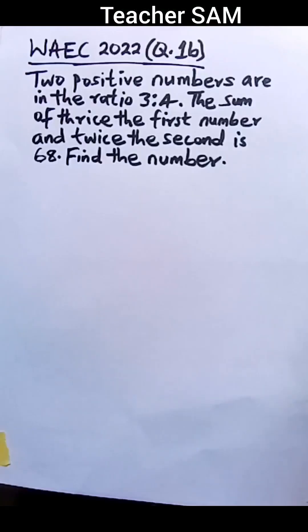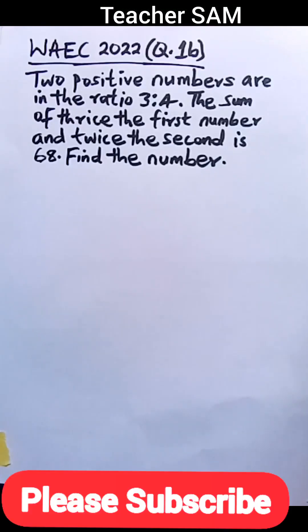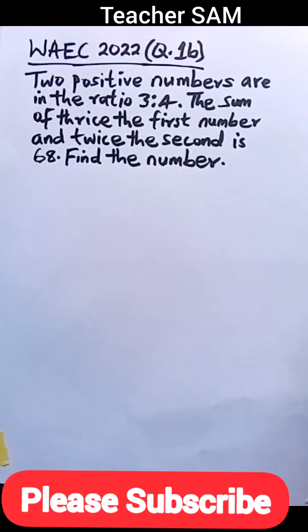Question 1b. Two positive numbers are in the ratio 3 is to 4. The sum of thrice the first number and twice the second is 68. Find the numbers.